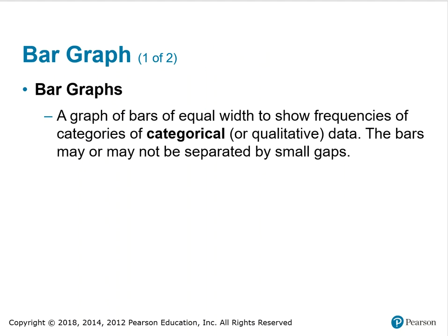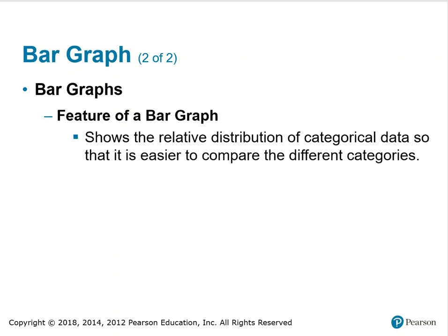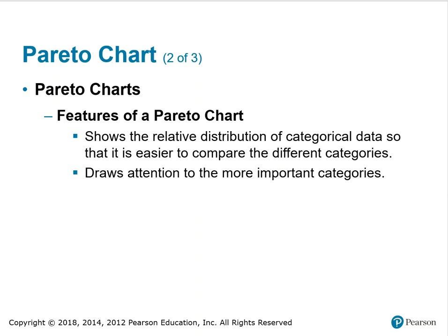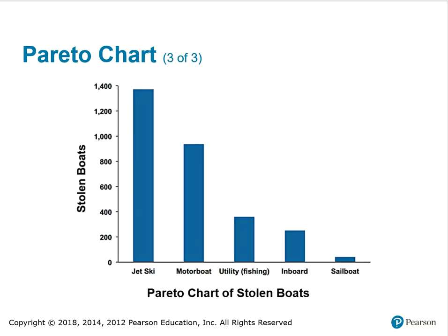A bar graph is a graph of bars of equal width to show frequencies of categorical or qualitative data. The bars may or may not be separated by small gaps. The feature of a bar graph is it shows the relative distribution of categorical data so it's easier to compare different categories. A Pareto chart is a bar graph for categorical data with the added stipulation that the bars are arranged in descending order according to frequency, so the bars decrease in height from left to right. The features of a Pareto chart: it shows the relative distribution of categorical data and draws attention to the most important categories.